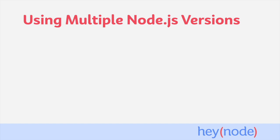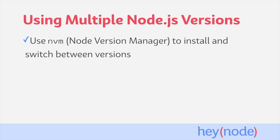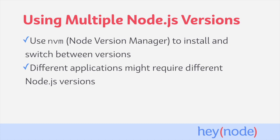With different versions of Node to choose from, and several floating around and supported at any given time, it makes sense that you might actually want to be using multiple versions of Node.js on your system. Luckily, there's a great tool which is not only the best way to install Node.js for local development, but also allows you to switch between any version of Node that you want. It's called NVM — Node Version Manager. NVM is indispensable if you're ever working with applications which are locked to a specific older version of Node.js. You can learn more about NVM in our tutorial about using it to install Node.js.